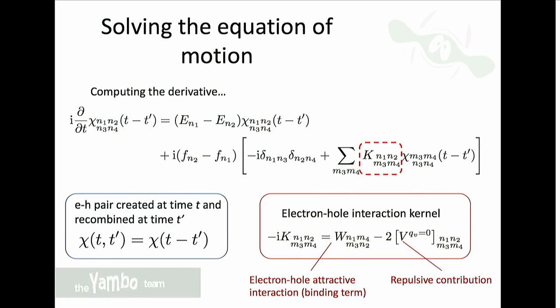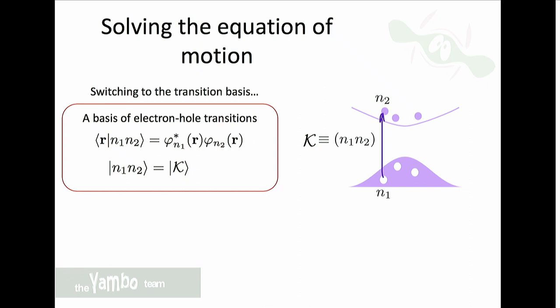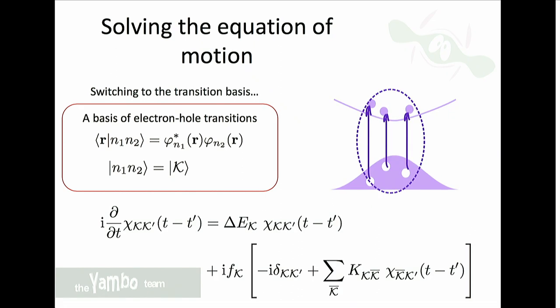The W plays the role of an attractive interaction between electrons and holes — it is the binding term that creates bound excitons — while the V term is a repulsive contribution. We simplify further by labeling each transition — for example n1 in the valence band and n2 in the conduction band — with a single index kappa, going to the transition basis. This simplifies how the equation appears.